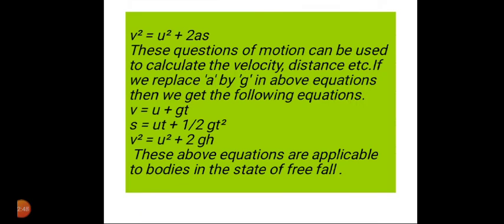By replacing a by g, we can put g in place of small a. Then we get all three equations: v = u + gt, s = ut + ½gt², and v² = u² + 2gs. These equations are applicable to bodies in the state of free fall.